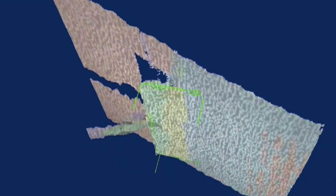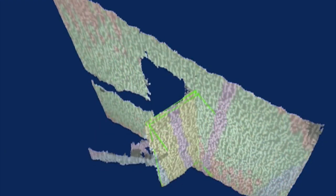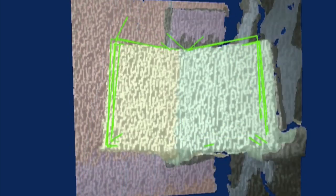After the search has converged to the final position of the rectangle, we compute the fill ratio of the rectangle and filter out those rectangles that have not enough support from the point cloud.